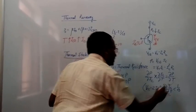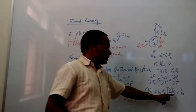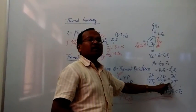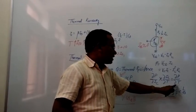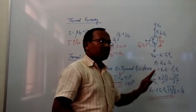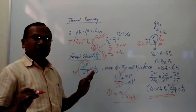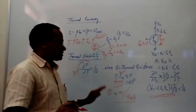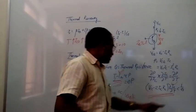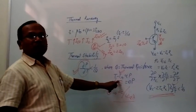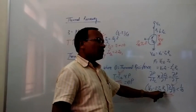Now consider these two important quantities. First, ∂IC/∂T: when temperature increases, collector current increases, and when temperature decreases, collector current decreases. So ∂IC/∂T is always a positive quantity. Second, θ (thermal resistance) is also always a positive quantity.